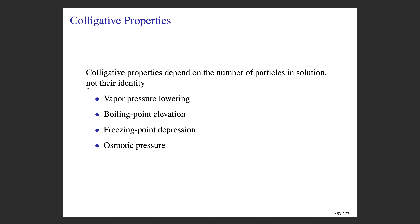There are four colligative properties we focus on. First is vapor pressure lowering: the vapor pressure of the solvent in solution is lower than the vapor pressure of the pure solvent. Related to this, the boiling point of the solvent in solution is elevated compared to the boiling point of the pure solvent. Conversely, the freezing point is depressed relative to the freezing point of the pure solvent. The fourth is the osmotic pressure effect.